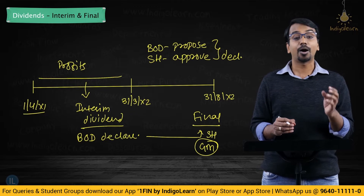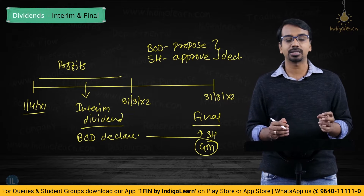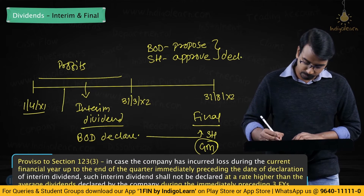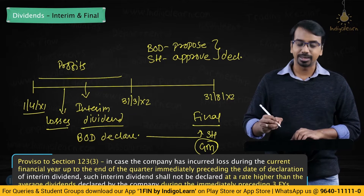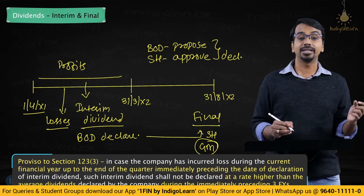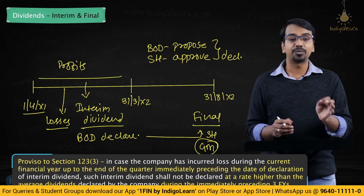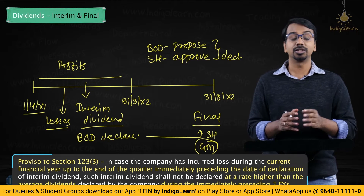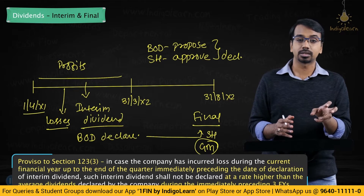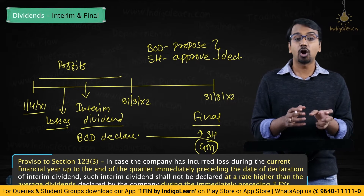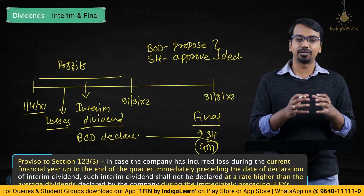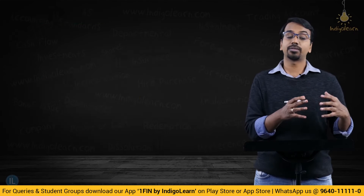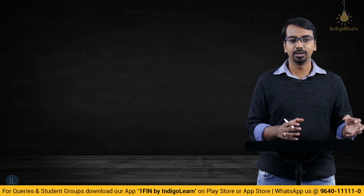Even for interim dividend payment, the company must have a surplus balance in the profit and loss account, or it should have earned profit in the current year. If there are losses in the interim period, there may still be a balance in the profit and loss account, but because of the loss, the maximum rate of dividend is the average of the three preceding financial years.